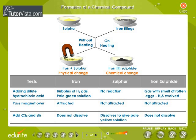For example, when you mix iron and sulfur without heating, a magnet still attracts the iron filings. This shows that iron and sulfur remain as separate entities and there is no chemical reaction between them. However, on heating, they undergo a chemical reaction and form ferrous sulfide, on which the magnet has no effect.